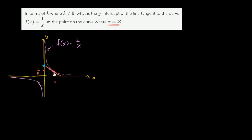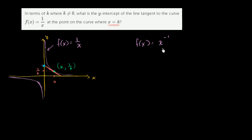The best way to do it — if we can figure out the slope of the tangent line, the slope of the tangent line is just the derivative of the function at that point. We already know that the tangent line contains the point k comma 1 over k. So if we know its slope and what point it contains, we can figure out what its y-intercept is. So the first step is: what's the slope of the tangent line? To figure out the slope, let's take the derivative. We write f of x as x to the negative 1 power — that makes it a little bit more obvious that we're about to use the power rule.